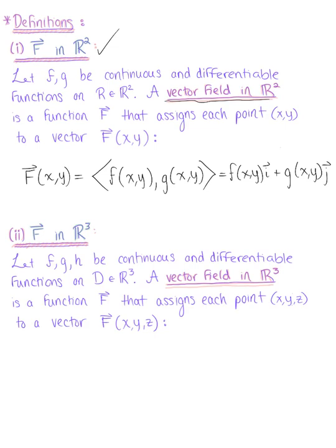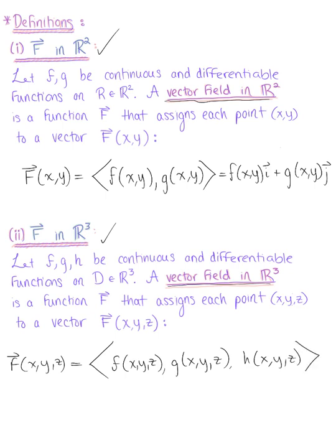Similarly, in R³, we let f, g, and h be continuous and differentiable functions on some region D in space. A vector field in R³ is again a function that assigns each ordered triplet to the vector. We would write this as capital F of (x,y,z). In our vector component form, we have F(x,y,z) = ⟨f(x,y,z), g(x,y,z), h(x,y,z)⟩. Equivalently, we can write this in standard unit vector form: f(x,y,z)î + g(x,y,z)ĵ + h(x,y,z)k̂.